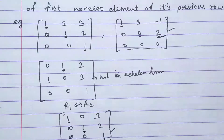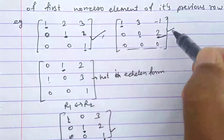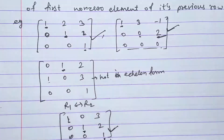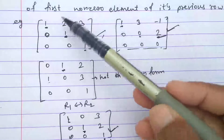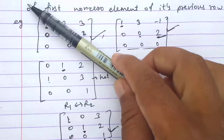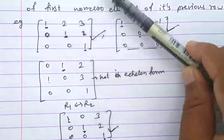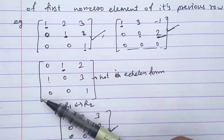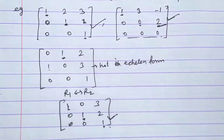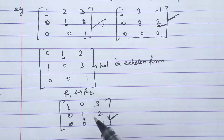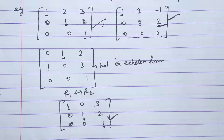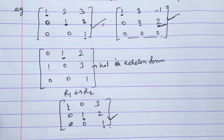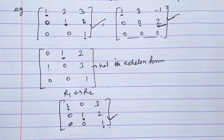Looking at all three echelon form examples, we see they all have an upper triangular form — elements below the diagonal are zero. So every echelon form is an upper triangular matrix. However, the converse is not true: not every upper triangular matrix is in echelon form.